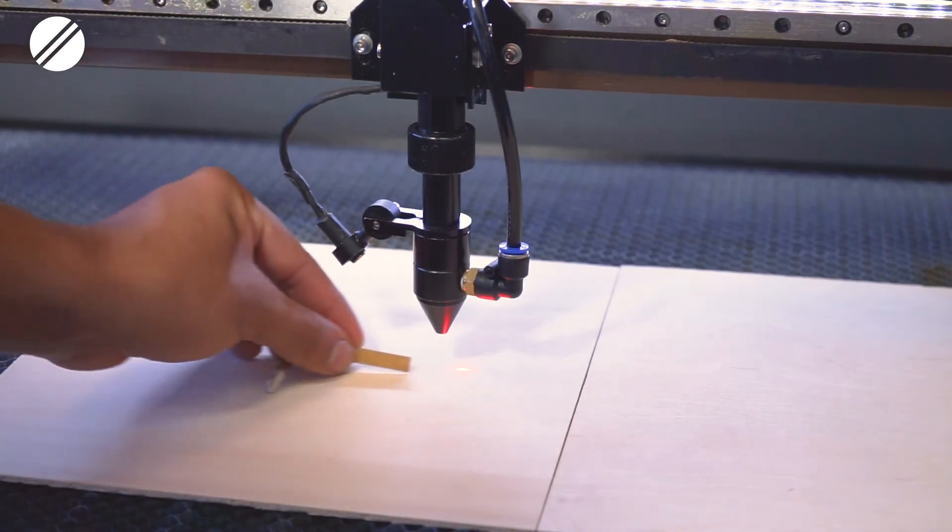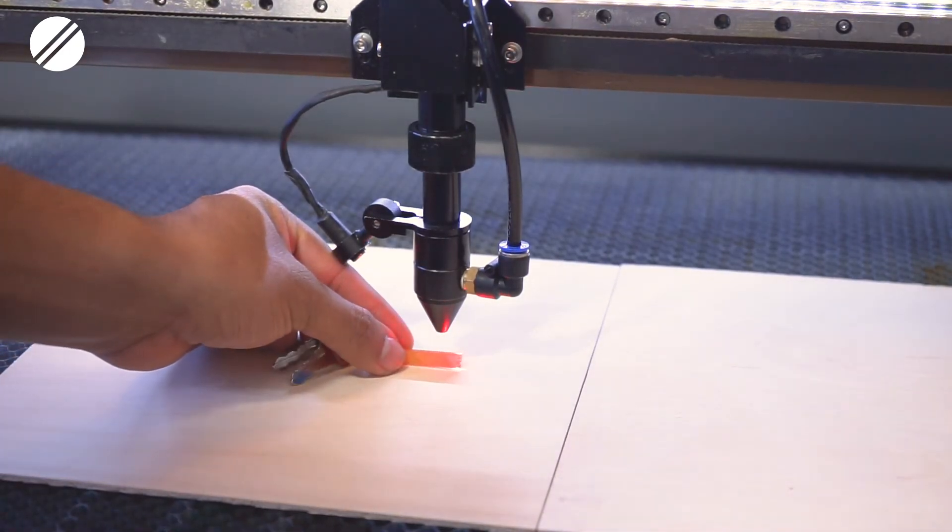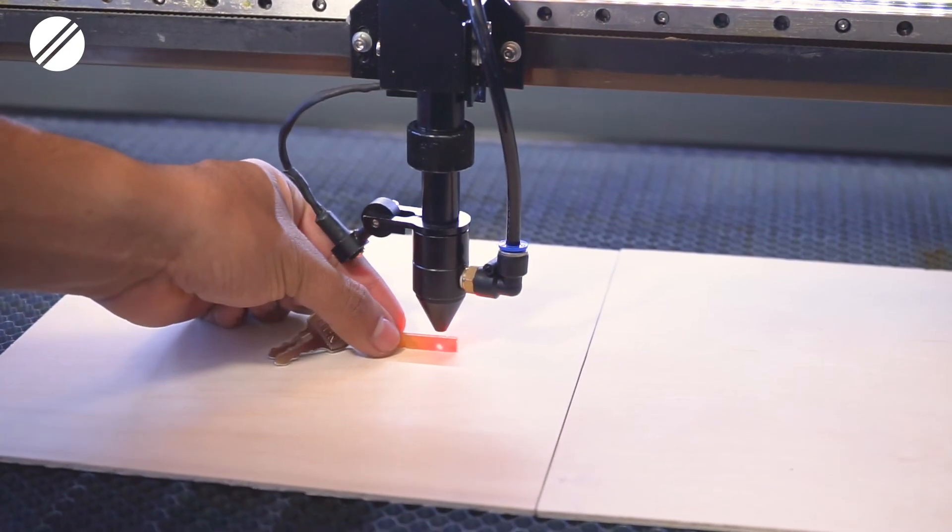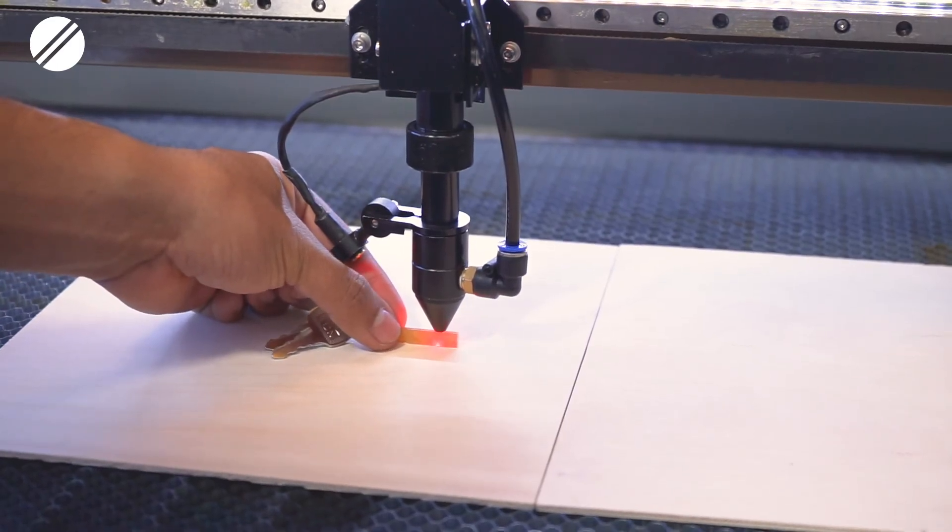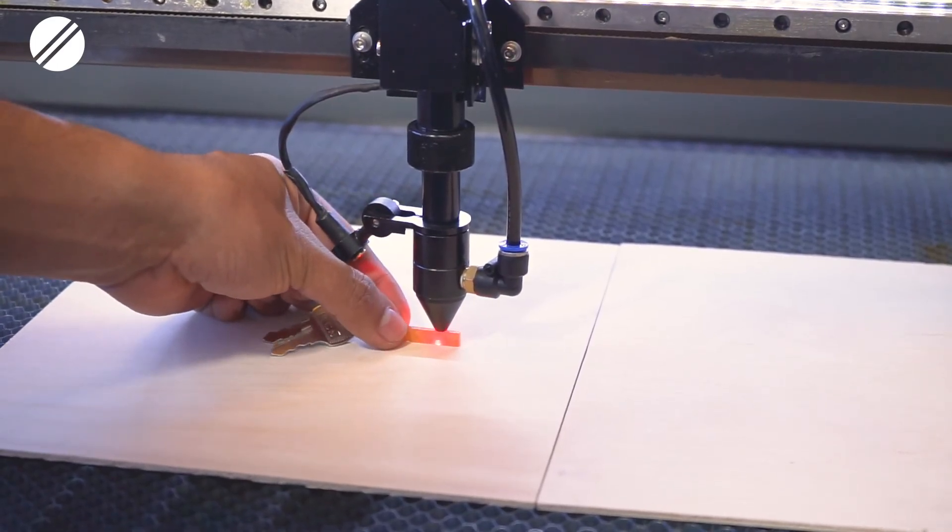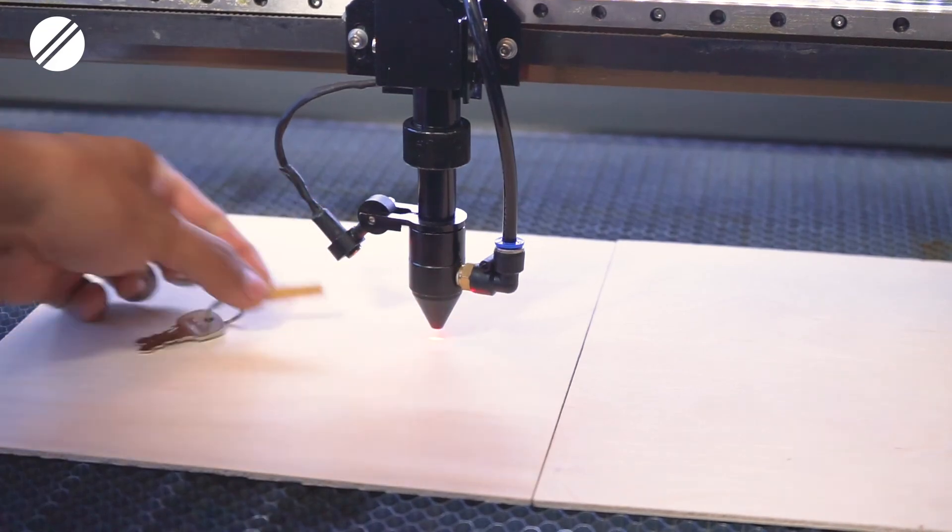Then you would want to place your focusing tool in that space and then slowly raise up the bed until your focusing tool makes contact with the laser head tip and the surface of the material.